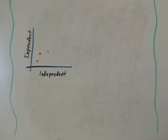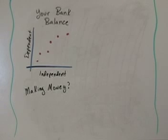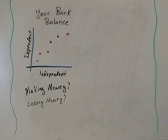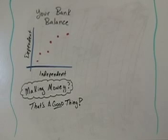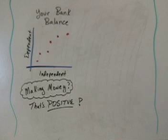Now, let's sketch a few data points here. Let's say that this graph represents your bank balance. Looking at your bank account, does it look like you're making money or losing money? Well, of course it looks like you're making money, and that's a good thing. So we say that's positive. This graph represents a positive correlation. As the amount of time increases, the balance in your bank account also increases.